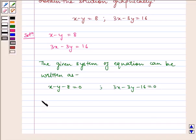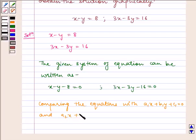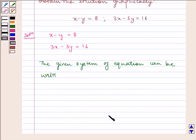Comparing the given equations with a1x plus b1y plus c1 equals 0 and a2x plus b2y plus c2 equals 0